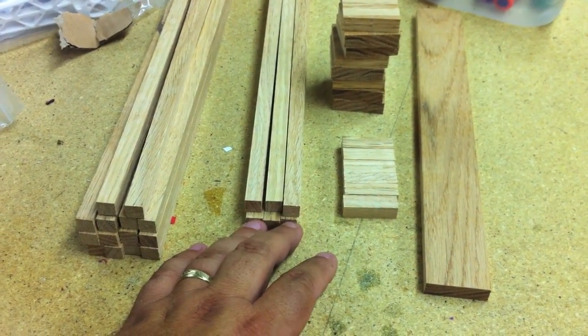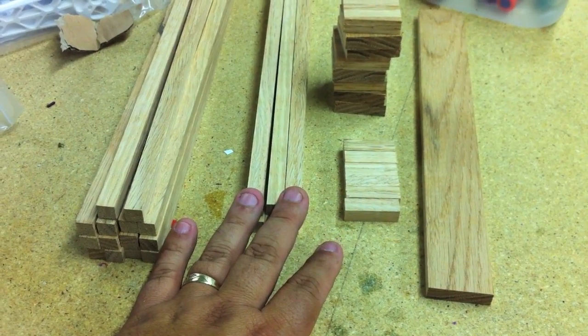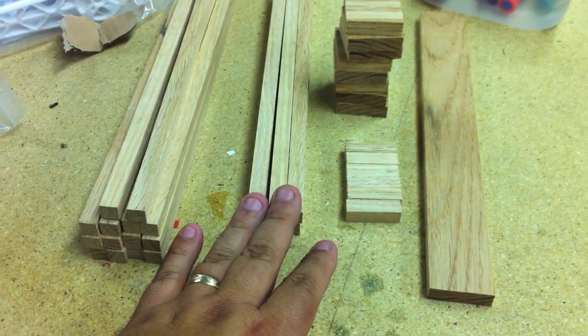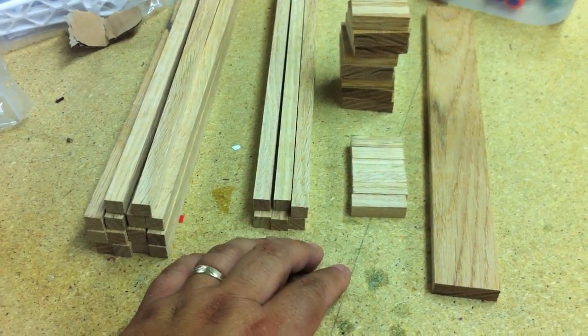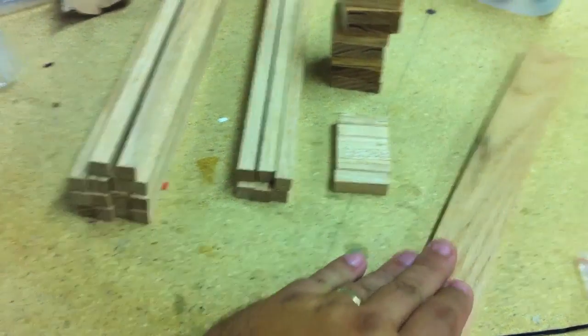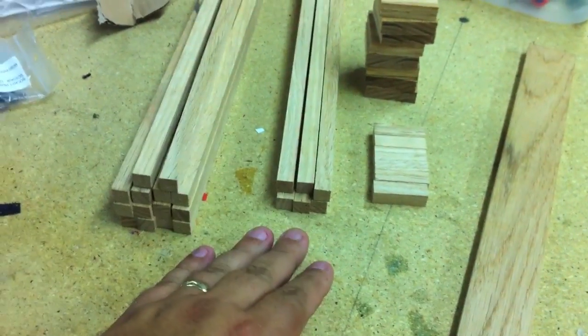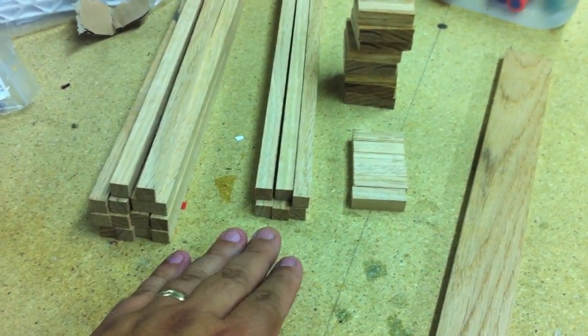So I planed these all down and made them 10mm square stock. I got the frame from RC Explorer and that's what he used - 10mm square arms. I wanted to do the same thing so that it matches the frame and how the frame is drilled.